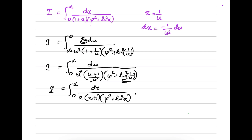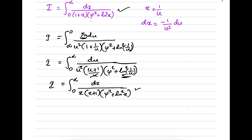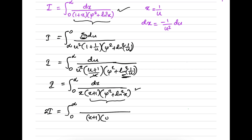We have I as our main integral and also I from the substitution. So I add i plus i to get 2 times i. With the same boundary from 0 to infinity, we take the common denominator (x plus 1) to the phi squared plus natural log squared of x, giving us the two integrands combined over that denominator.